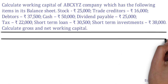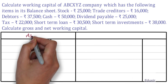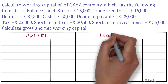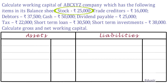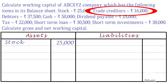Before we proceed, let us segregate the assets and liabilities and tabulate them in the following table. Stock will fall under an asset, so we have to tabulate it under the assets section. Trade Creditors represent that the company owes an amount of Rs. 16,000, which is a liability that the company has to pay to either suppliers or vendors who have provided raw materials, products, or services to the company.